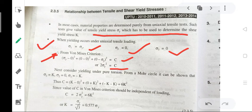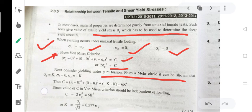The value obtained is 2(sigma_y)² = C. Next, consider yielding under pure torsion. From a Mohr circle, it can be shown that sigma_1 = k, sigma_2 = 0, and sigma_3 = -k. Substituting these values, C = 6k².